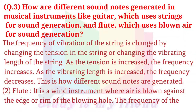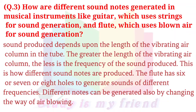This is how different sound notes are generated. Two. Flute. It is a wind instrument where air is blown against the edge or rim of the blowing hole. The frequency of the sound produced depends upon the length of the vibrating air column in the tube. The greater the length of the vibrating air column, the less is the frequency of the sound produced. This is how different sound notes are produced. The flute has six, seven, or eight holes to generate sounds of different frequencies. Different notes can also be generated by changing the way of air blowing.